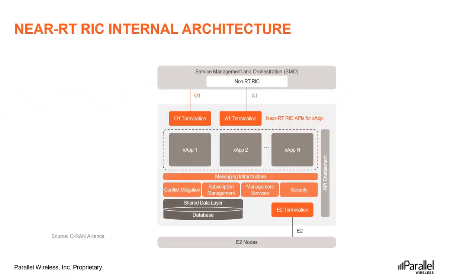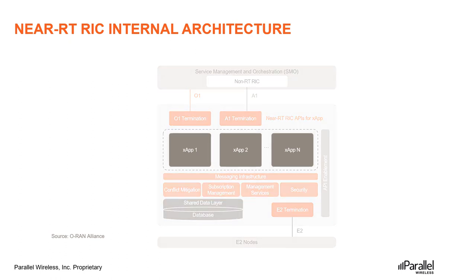Let us now look at the near-real-time RAN Intelligent Controller's internal architecture. An X-App is an application designed to run on the near-RT RIC — X stands for 'any', so any app designed to run on the near-RT RIC. It is likely to consist of one or more microservices, and at the point of onboarding will identify which data it consumes and which data it provides. The application is independent of the near-RT RIC and may be provided by any third party. The E2 interface enables a direct association between the X-App and the RAN functionality.